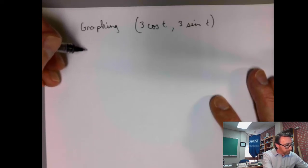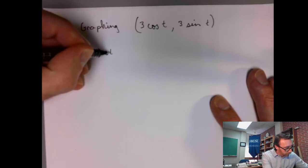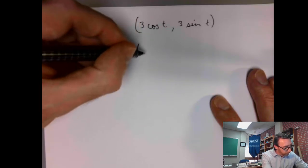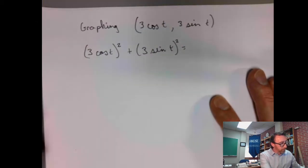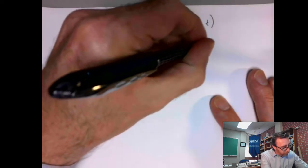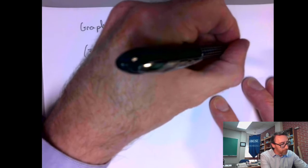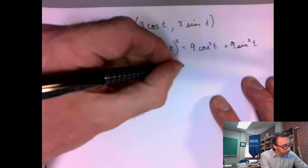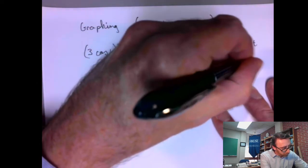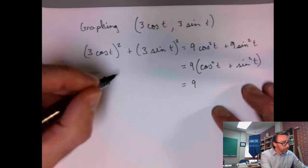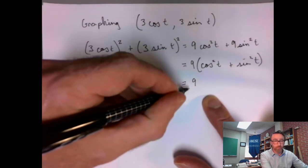So, I want you to notice something here. If I take this thing and I take this thing, take my two coordinate functions and I square them, let me look at what I get. So I have to square both of the factors. So I have 9 cosine squared t plus 9 sine squared t. I can factor out my 9, cosine squared t plus sine squared t. And we know our trigonometry. We know from the Pythagorean identity that cosine squared t plus sine squared t equals 1. So we're just left with this 9.